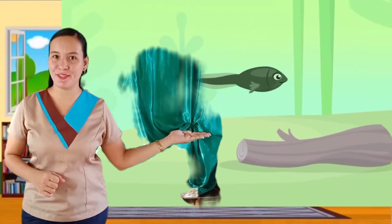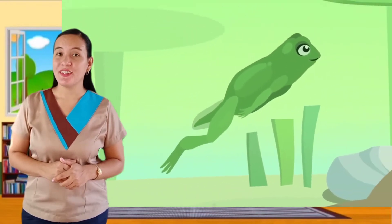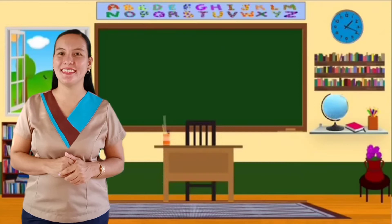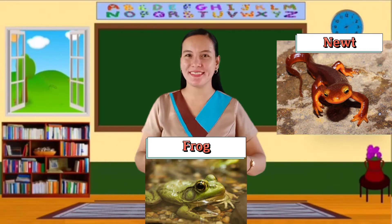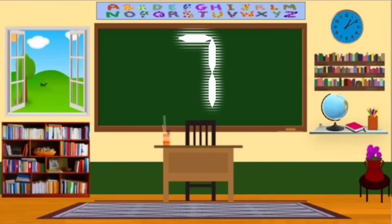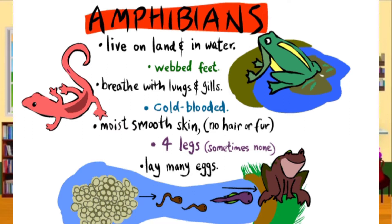Young amphibians use their gills to breathe underwater. As they grow older, these gills develop into lungs so they can live on land. Examples of amphibians are newts, frogs, and toads. Let us read all together the characteristics of amphibians: Amphibians live in both land and water. They breathe through their gills and lungs. They have moist skin and they lay many eggs.